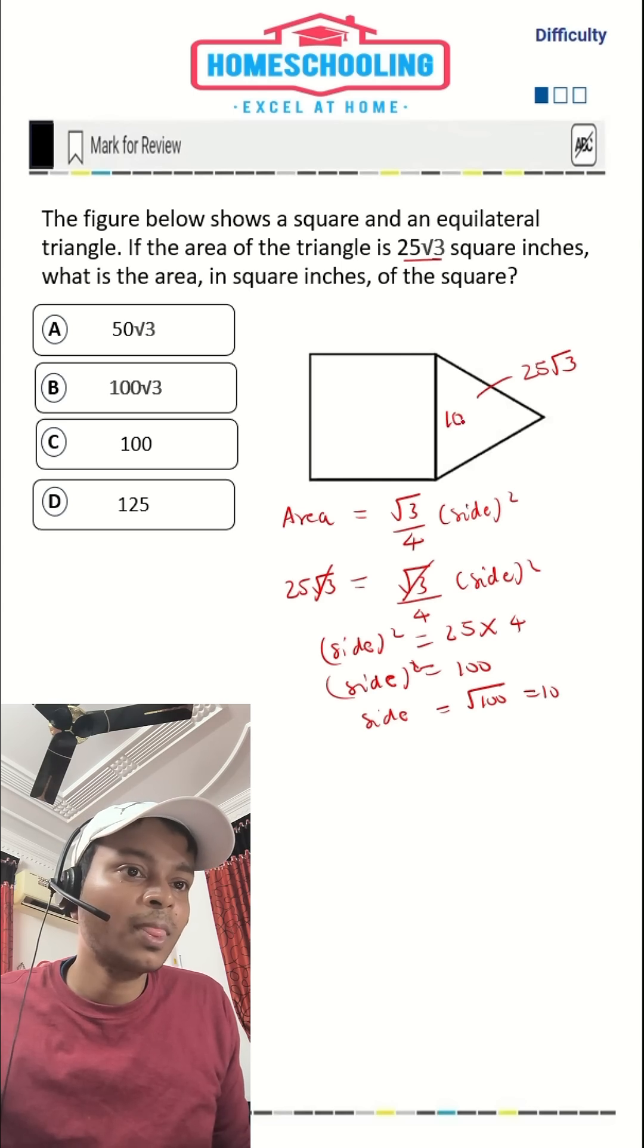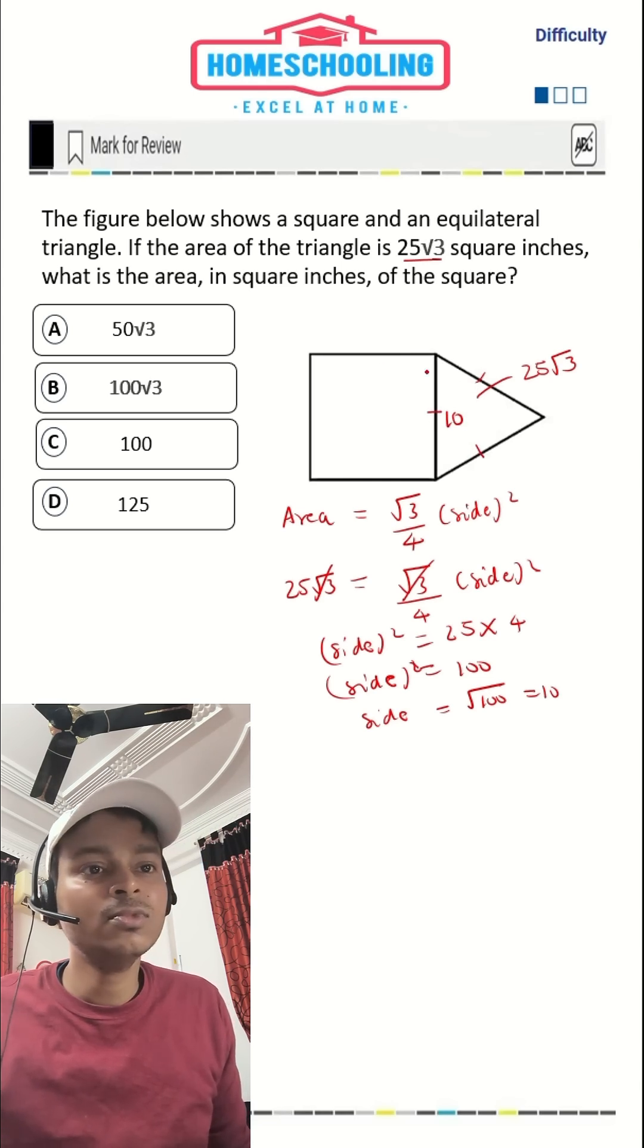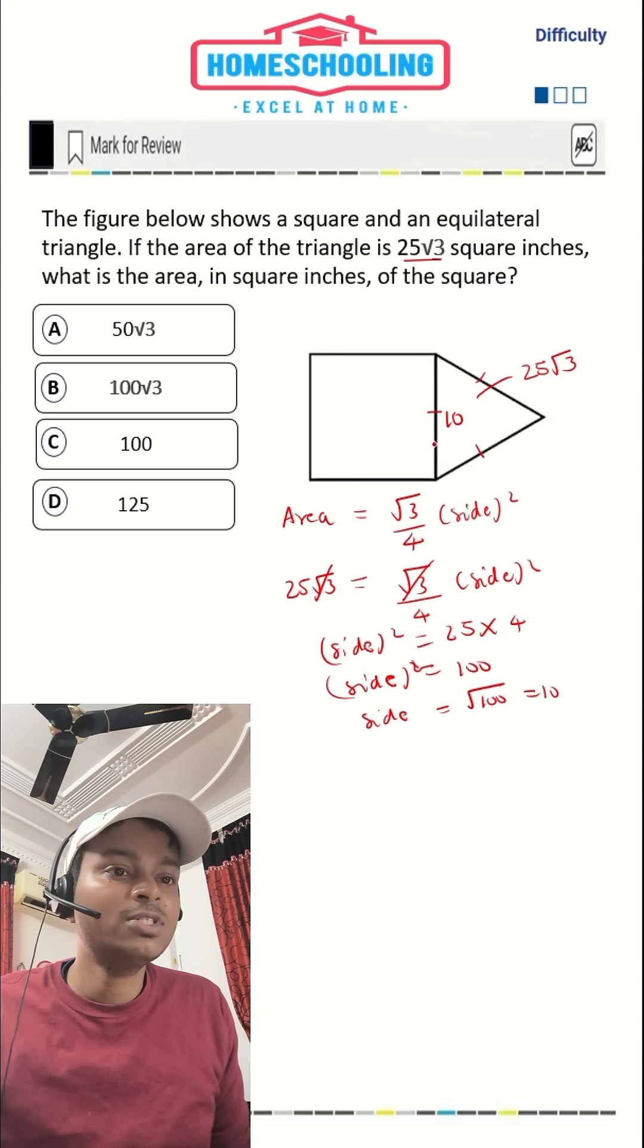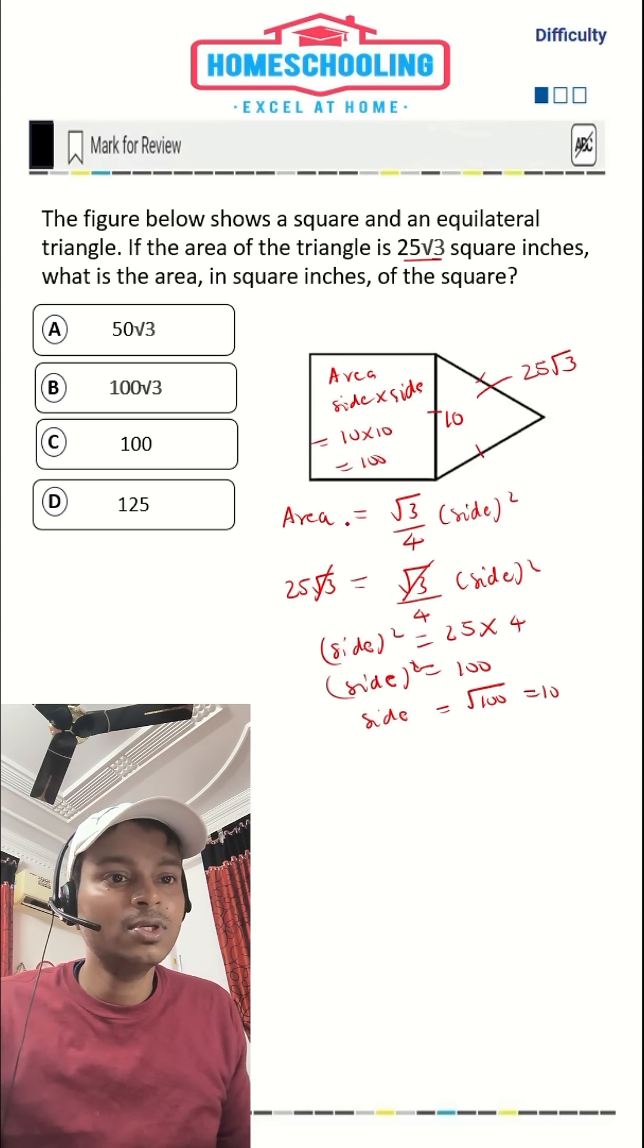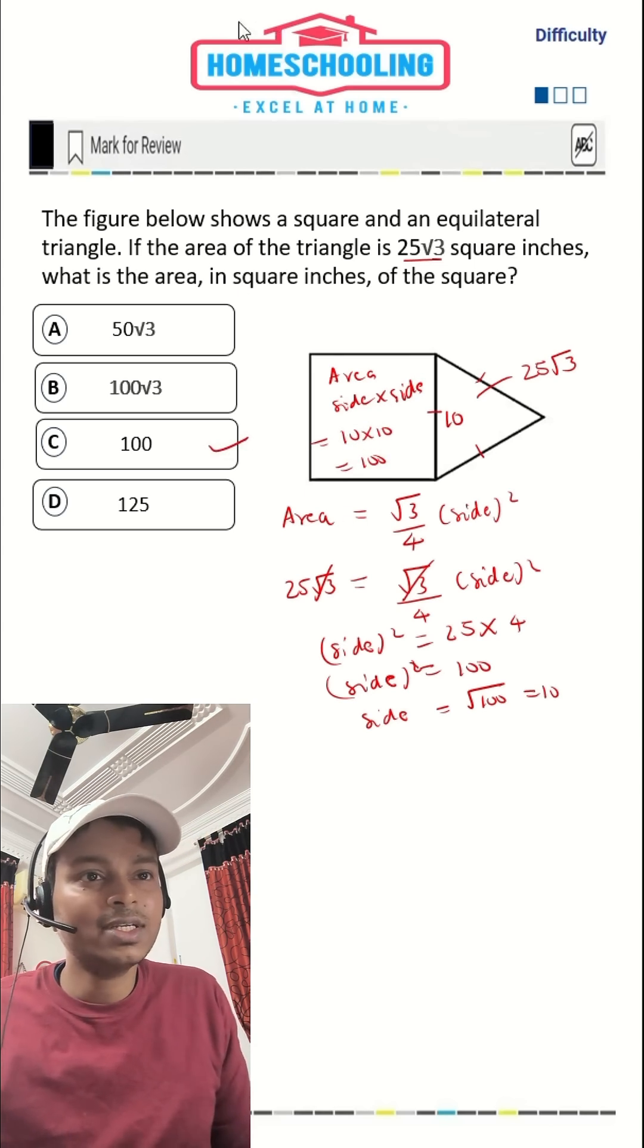Now we know the side of the equilateral triangle. Since all sides are equal in an equilateral triangle, we now know one of the sides of the square. Area of square would be side × side, or side², that is 10 × 10 = 100. So option C is your correct answer.